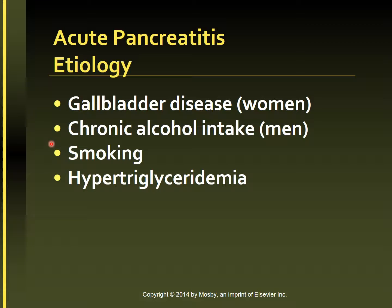Smoking is an independent risk factor for acute pancreatitis. Biliary sludge or microlithiasis, which is a mixture of cholesterol crystals and calcium salts, is found in 20 to 40 percent of patients with acute pancreatitis. The formation of biliary sludge is seen in patients with bile stasis. Acute pancreatitis attacks are also associated with hypertriglyceridemia, with serum levels of triglycerides above 1,000 mg per deciliter.